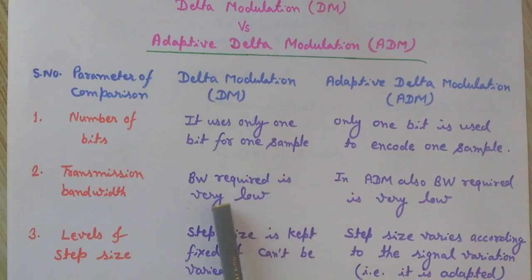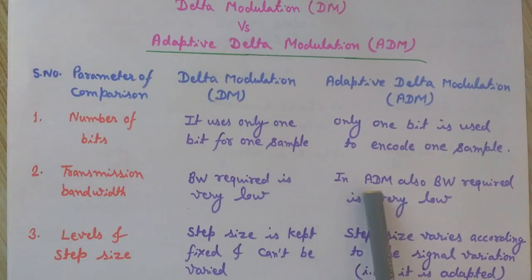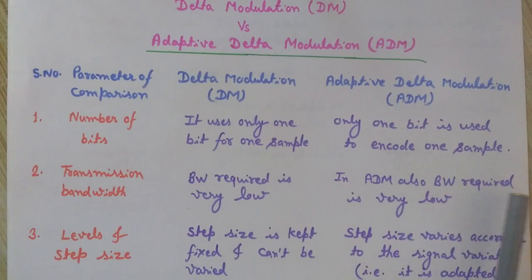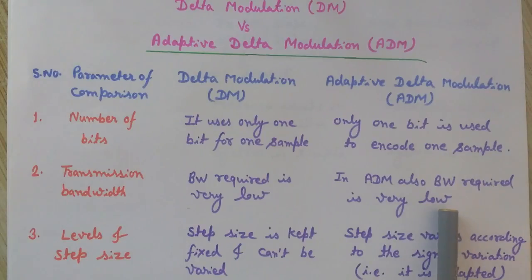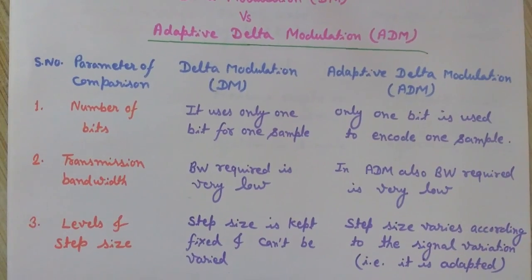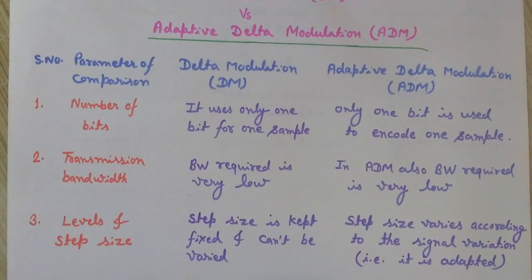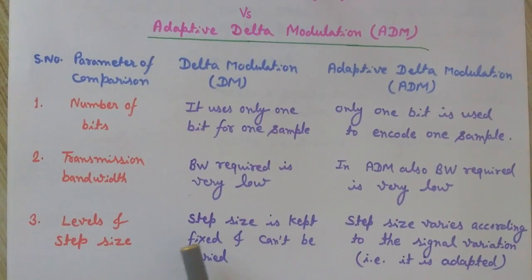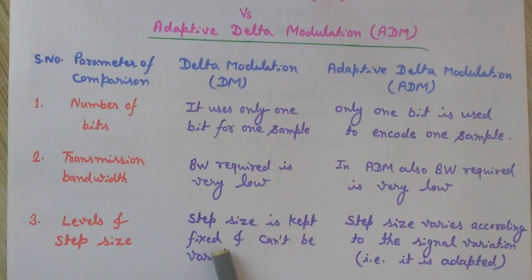The second point is transmission bandwidth. In Delta modulation the bandwidth required is very low, and in adaptive Delta modulation the requirement of bandwidth is also low.